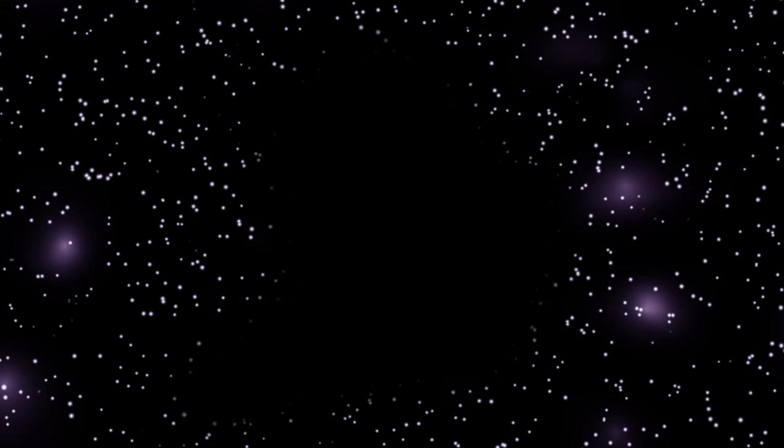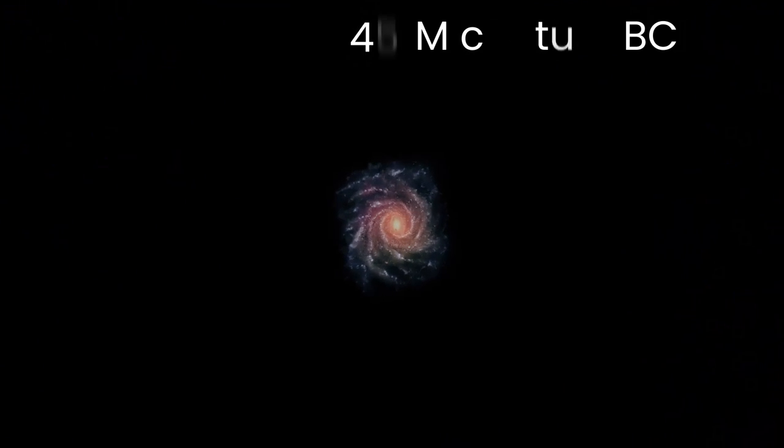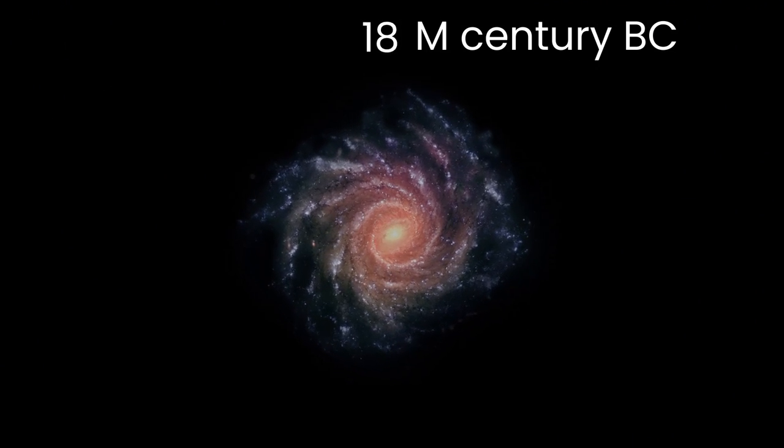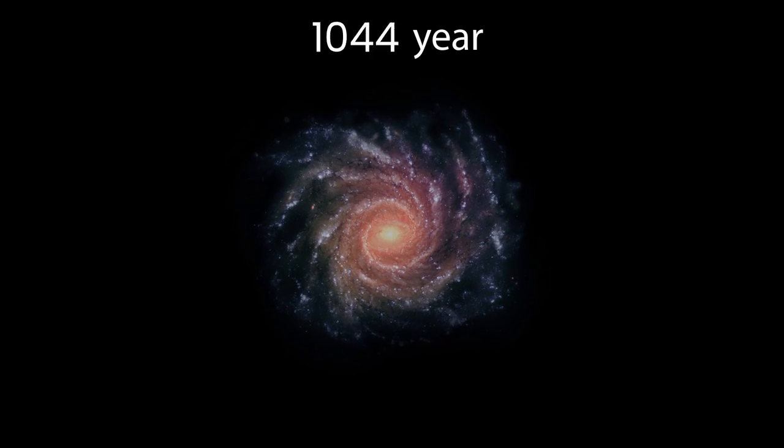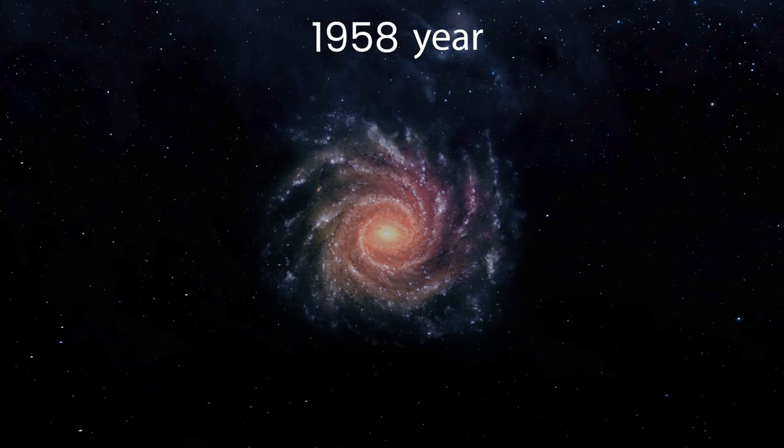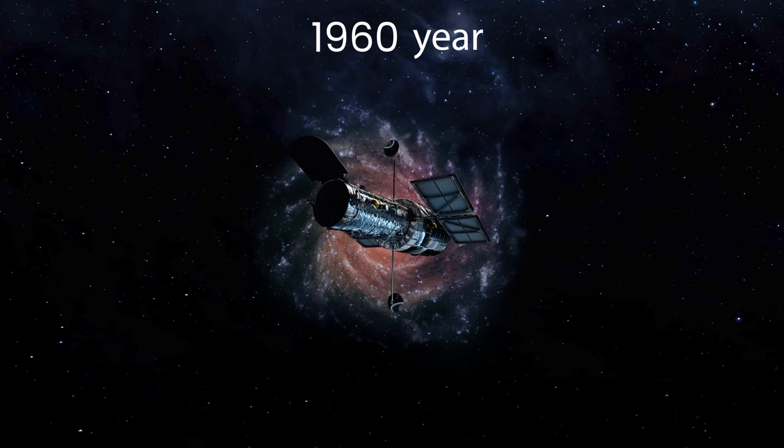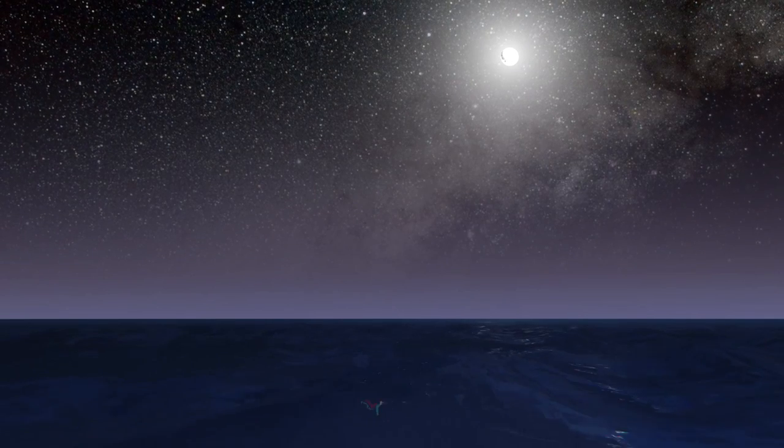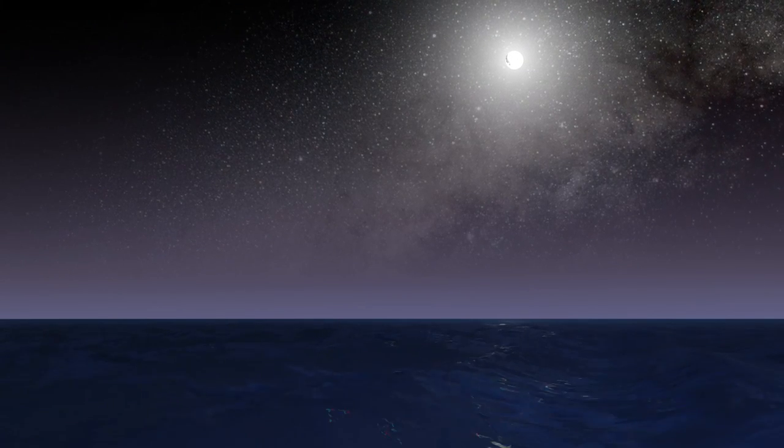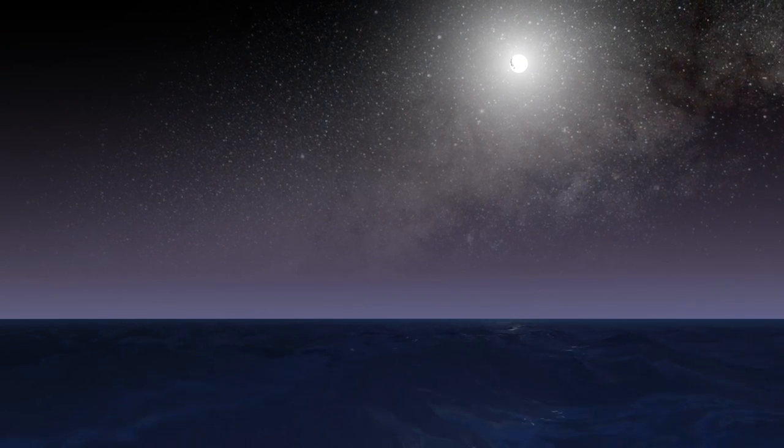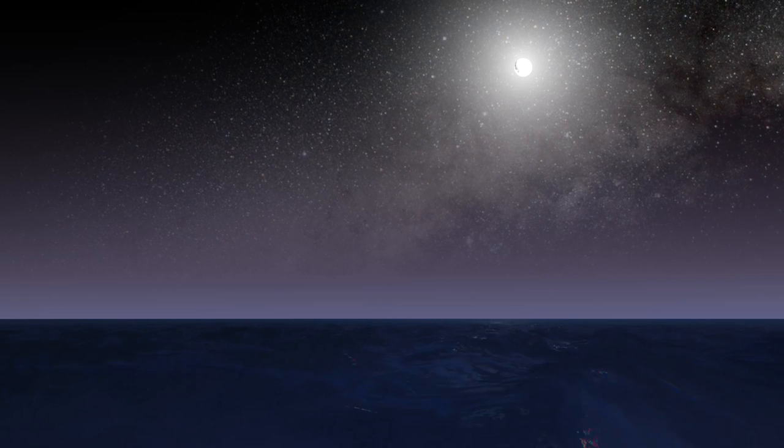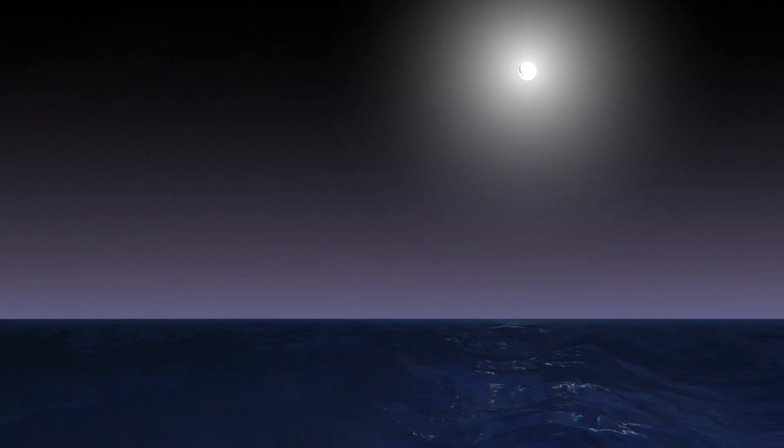According to astronomer Greg Aldering, if our galaxy, the Milky Way, was at the center of the Boötes void, we would have learned about the existence of other galaxies in only the 1960s of the 20th century. When powerful telescopes with mirror diameters of more than a meter appeared. And the night sky above us would not be so beautiful, dotted with many bright stars. There would be a couple of stars in a completely black sky. Or maybe there would be nothing at all.